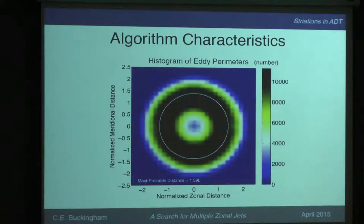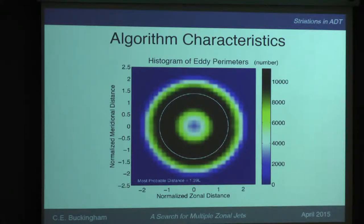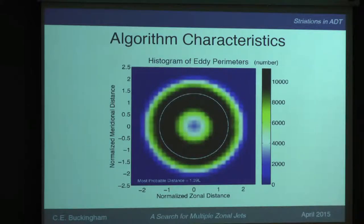The details of which I'll leave for you to read. This is an example of a two-dimensional histogram of all the eddy perimeters identified in the South Pacific over a certain amount of time. I then divided those eddy perimeters by a distance that Dudley-Chelton has associated with each eddy, giving a normalized zonal and meridional distance. On average, the flow we're taking out is not zonal — it's quite isotropic — giving us confidence that the algorithm is behaving properly.